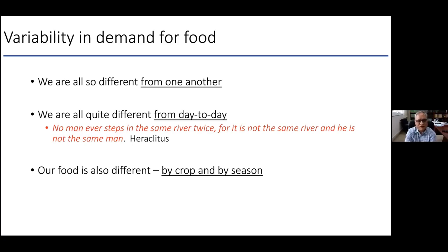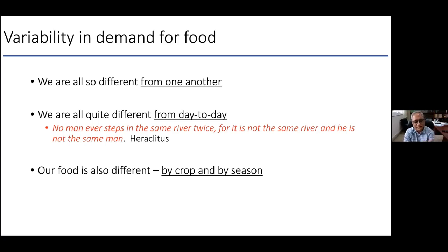There is inter-individual variability — we are all different people. And there is intra-individual variability — we are quite different from day to day. As Heraclitus said, no man ever steps in the same river twice, for it is not the same river and he is not the same man. Your requirements also vary with the food supply itself: a good year yields crops with more nutrients, and different seasons have different nutrients.